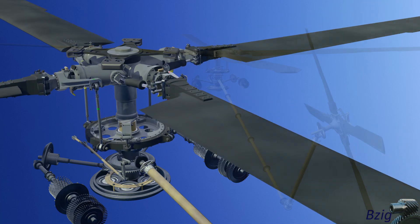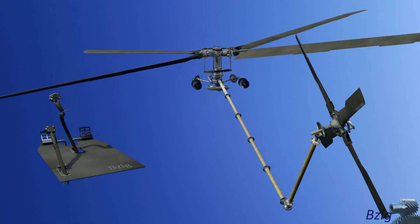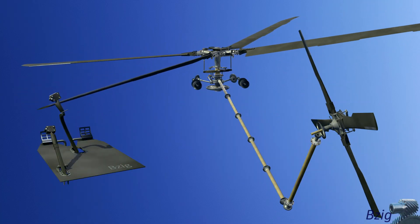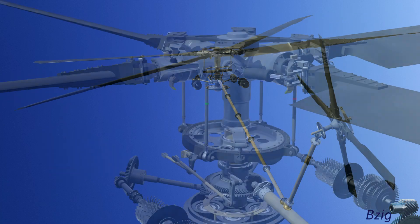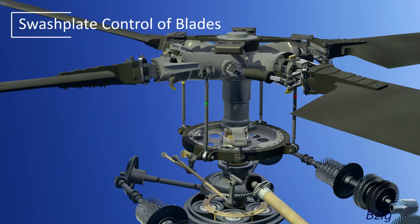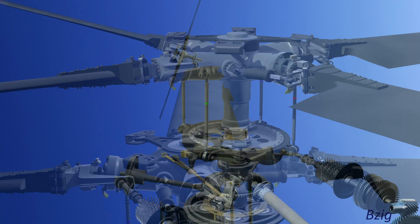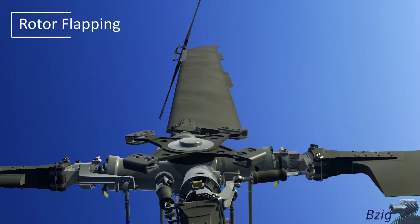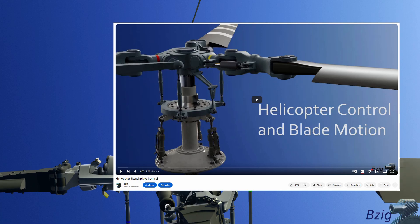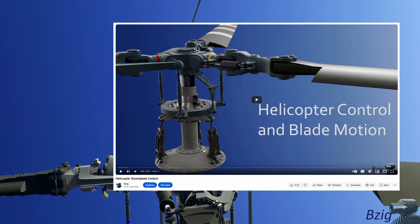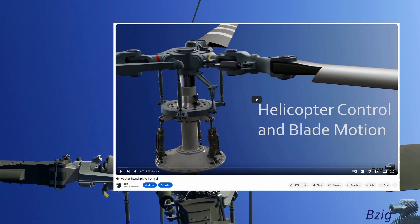Controlling a helicopter is achieved by tilting the rotor disc in the direction we want the helicopter to fly. This tilt of the disc requires two things: first, controlling blade feathering with a device called a swashplate, and second, the ability for the blades to flap. If you're interested in how the swashplate mechanically controls feathering, there's another video in this playlist dedicated to that subject.